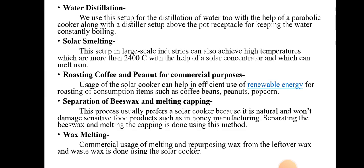Let's see each application in detail. For water distillation plants, we use a setup for distillation of water with the help of the parabolic cooker, along with a distiller setup above the pot, responsible for keeping the water constantly boiling. In the water distillation plant, we are boiling the water to remove various contaminants, and solar cookers are used for this purpose.